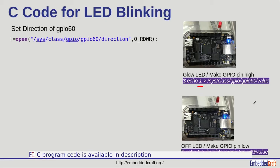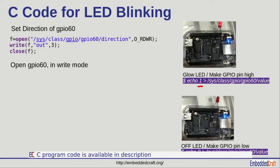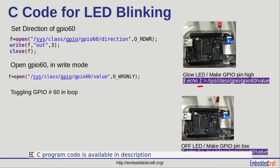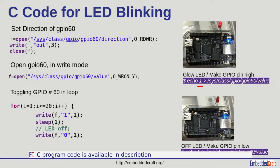First we have to set the direction of GPIO 60. For this, use the open API to open the GPIO 60 direction file in read-write mode, use the write API to write 'out', and close the file. Then open the GPIO 60 value file in write mode. In a loop we write 1 and sleep, then write 0 and sleep. This block is responsible for LED blinking.